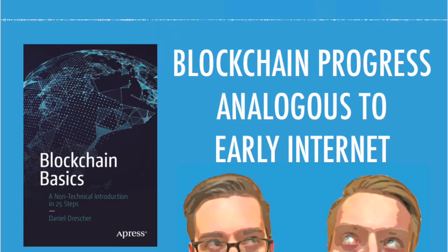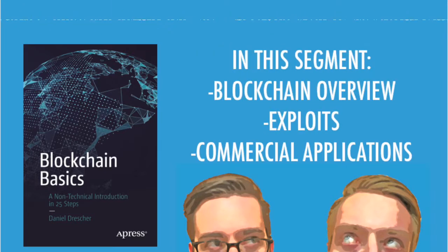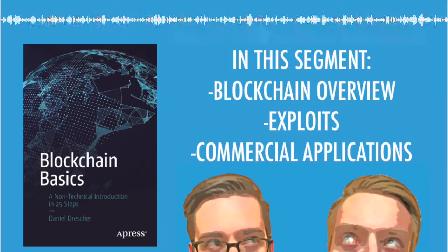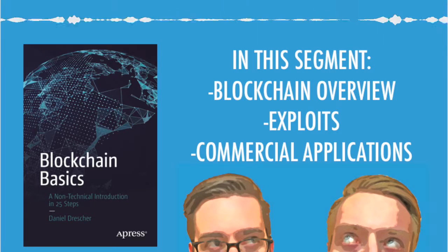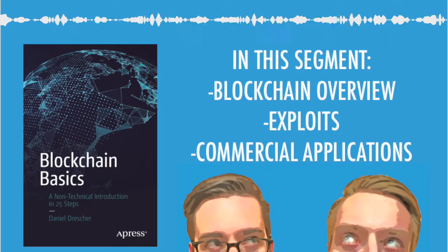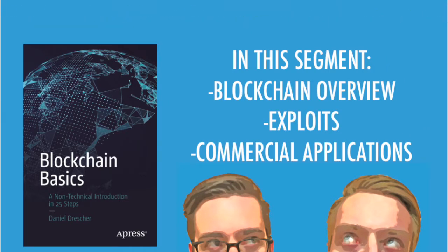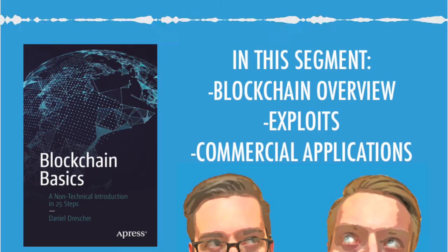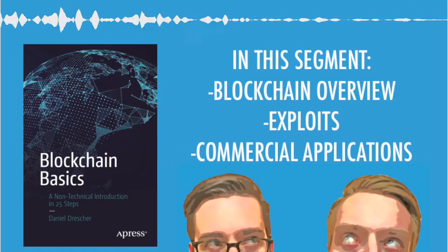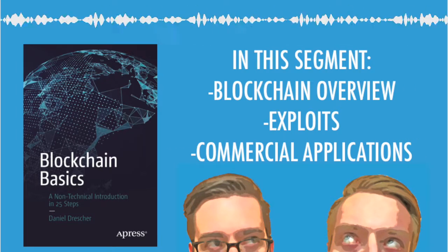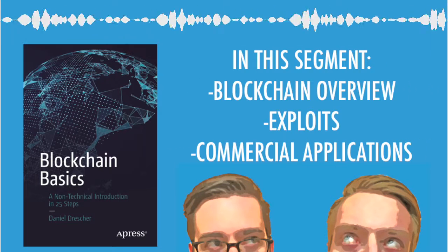In terms of the format of this segment, we're going to talk through the description that Daniel gave of the blockchain in the book to give you a solid grounding of what the blockchain actually is. After that, we're going to talk about exploits — basically the way you might take advantage of a blockchain and turn it to your own ends. And then finally, we're going to talk about commercial projects and the ones we think might be the most viable.